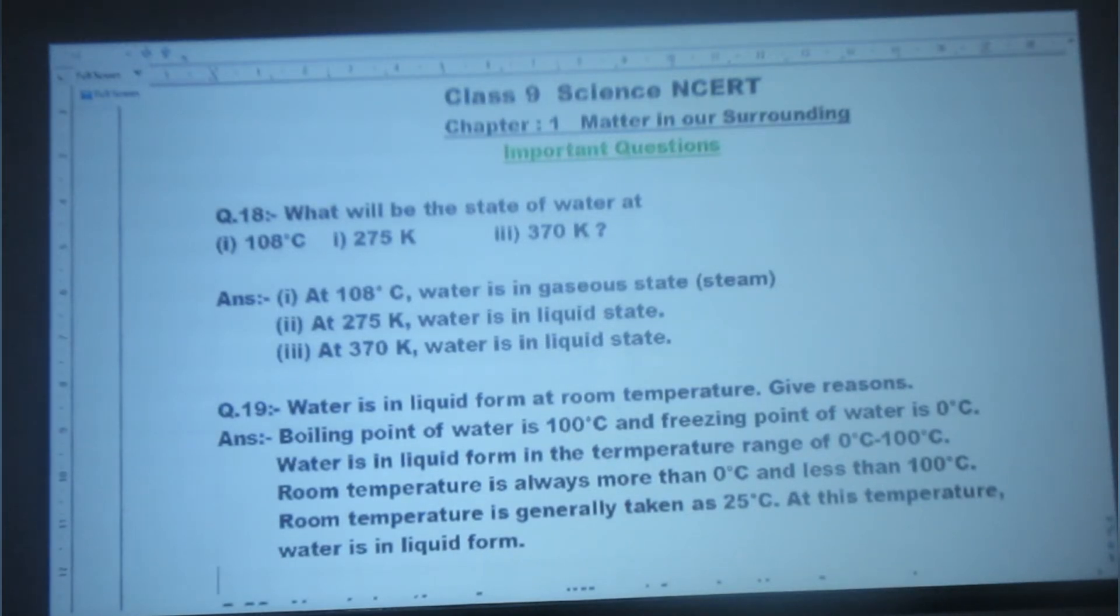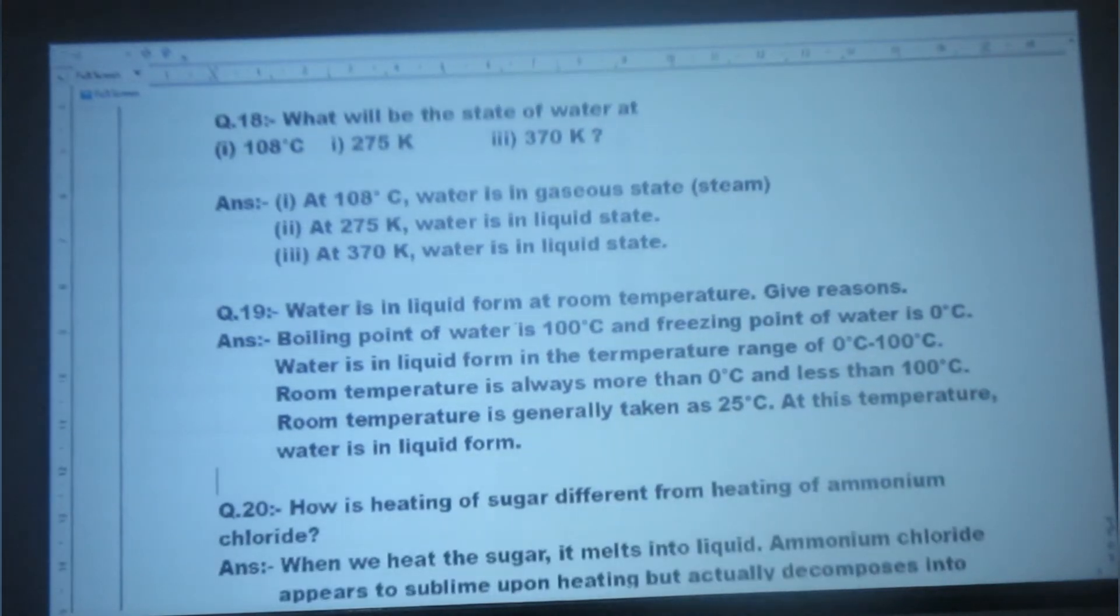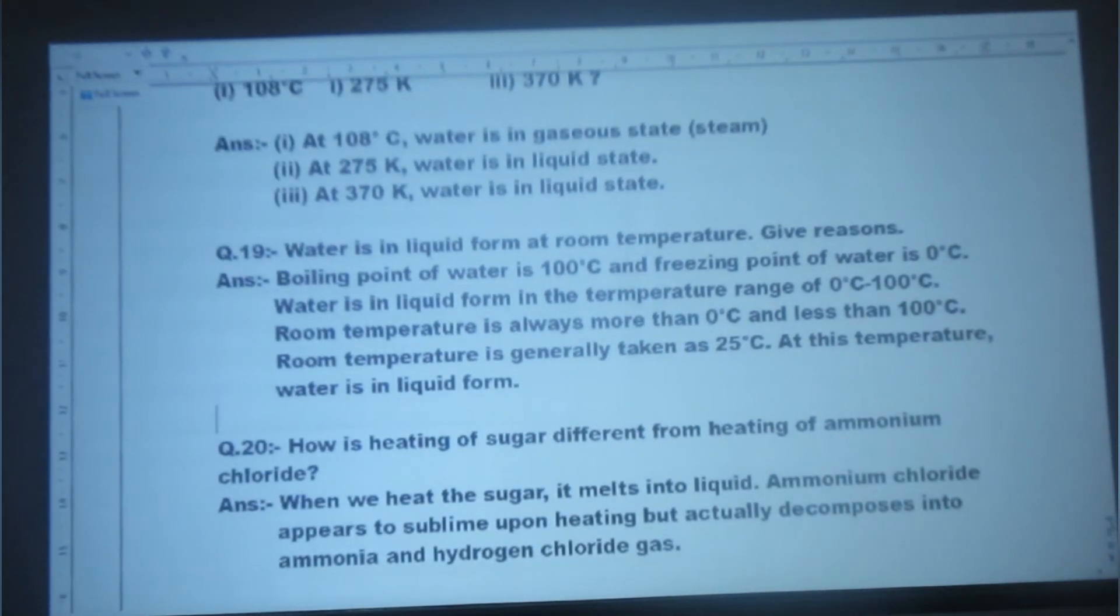Water's boiling point is 100 degree Celsius and freezing point is 0 degree Celsius. Between 0 to 100 degree Celsius range, water is in liquid form. Room temperature is more than 0 degree Celsius and less than 100 degree Celsius. Room temperature is generally taken as 25 degree Celsius. At this temperature, water is in liquid form.